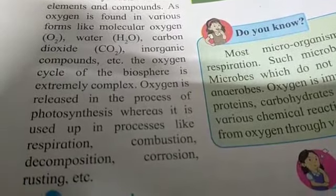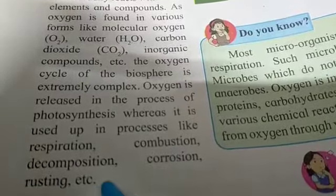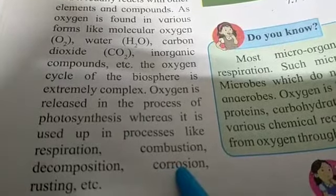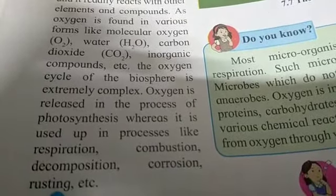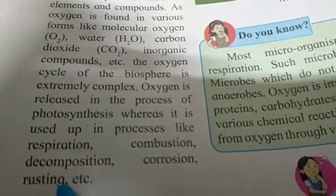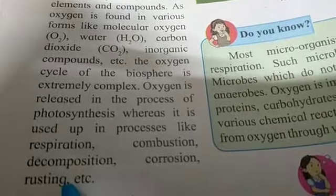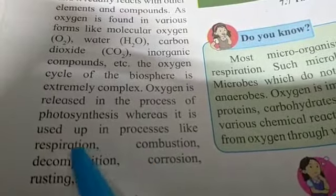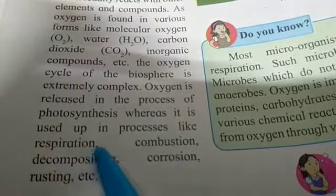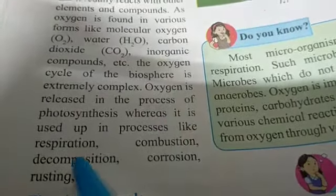Oxygen is also used in combustion, decomposition, corrosion, and rusting. Corrosion means when certain things are left outside for a long time and they turn black — that is called corrosion. Rusting refers to iron objects that get rust on them. In all of these processes, oxygen plays a part.